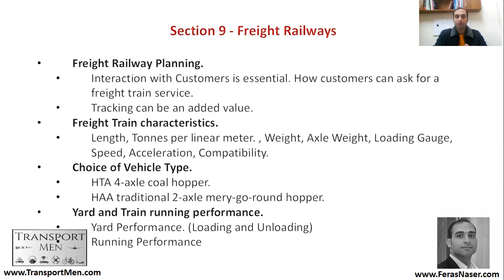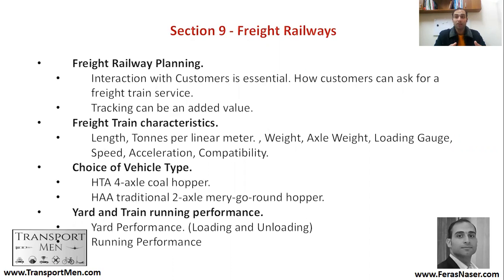Here we start with freight railways, which is a very important part of railway services. There are different types of freight that need to be moved. It can come as small boxes placed in a container, but also as bulk flow materials such as phosphate. There are different types of carriages used to transfer different types of freight.